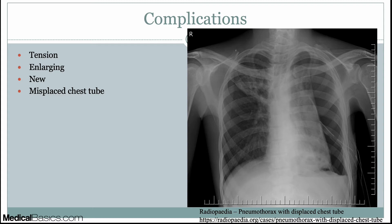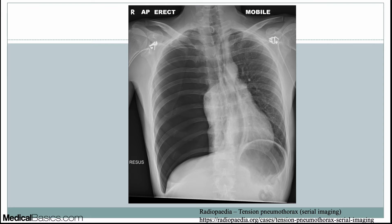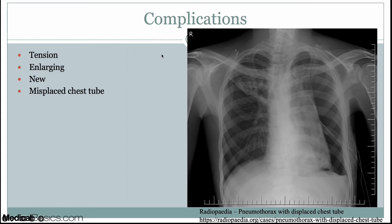Let's talk about complications of pneumothoraces and what to look for on follow-up chest x-rays, especially in the ICU. There are four major things: Is there tension? Is the pneumothorax getting bigger? Is there a new pneumothorax? And is there a misplaced chest tube? These are all critical things to look for on ICU rotations.